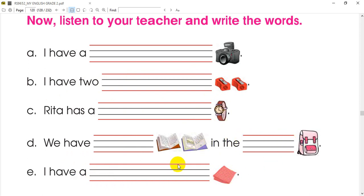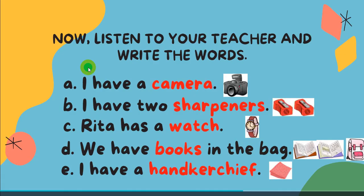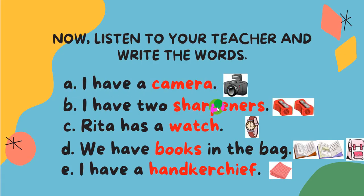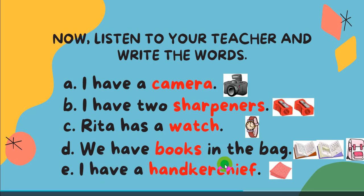I have a handkerchief for you. First, I have a camera — A. I have two sharpeners — B. Rita has a watch — C. We have books in the bag — D. And I have a handkerchief — E. So we have the answer.